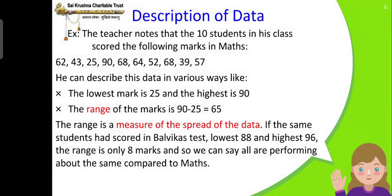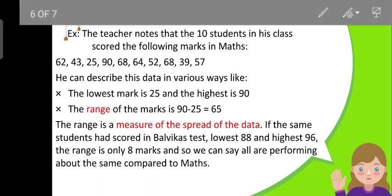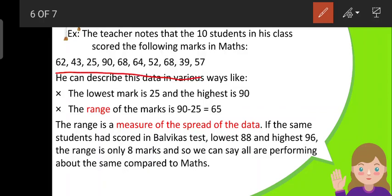Description of data. Let's take an example here. The teacher notes that the 10 students in his classroom scored the following marks in Maths. These are the 10 marks scored by 10 students in Maths subject. He can describe this data in various ways. How can he describe? He can say that the lowest mark is 25 and the highest mark is 90. Just by looking at this information, you can say the lowest mark is 25 and the highest mark is 90.